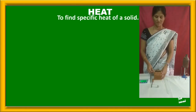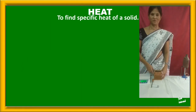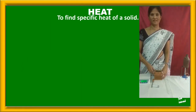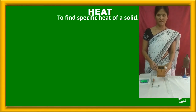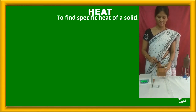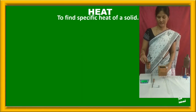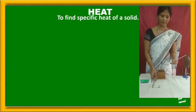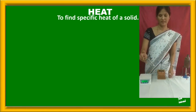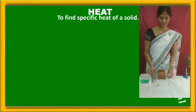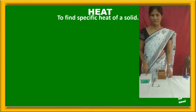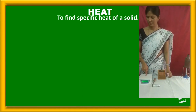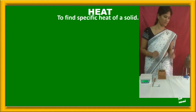Now we are going to find the specific heat of lead shots. For this we are using a calorimeter which is insulated with an insulator, and a beaker in there with a stirrer, a thermometer, lead shots in a boiling test tube, a weighing machine, water, and a preheated boiler.